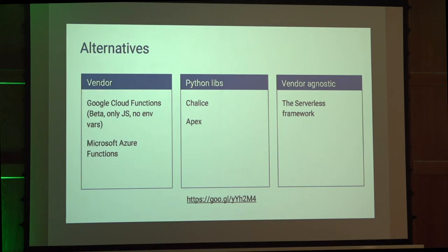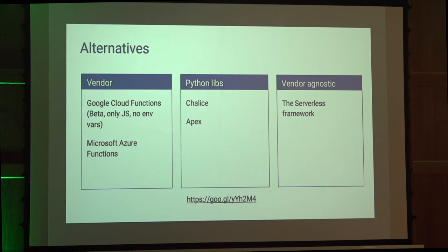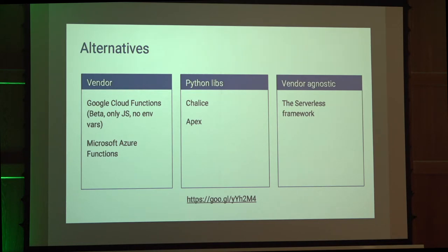There are alternatives. There's Google Cloud Functions, which as far as I know is in beta, only supports JavaScript, and doesn't support environment variables — which is a showstopper for me. If you want to use Microsoft products, there's something for the Azure platform as well. In the Python ecosystem there's Chalice and Apex, though I haven't tried them. There's also the Serverless Framework — a vendor-agnostic solution whose promise is that you develop once and deploy to any cloud that supports function-as-a-service.